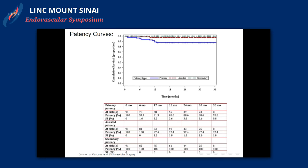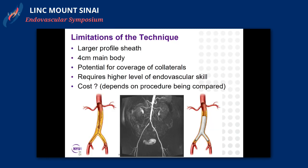Patency results: primary, assisted primary, and secondary patencies are shown out to two years with meaningful at-risk numbers. Primary patency at two years was 88.6%, assisted primary was 97.4%, and secondary patency was 100% at two years. So quite promising.